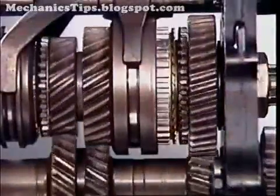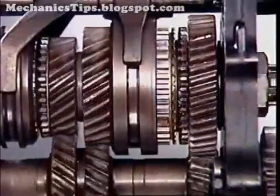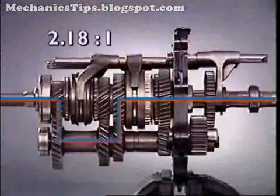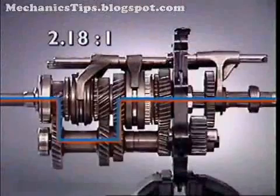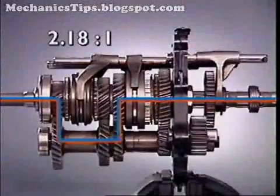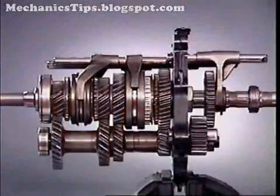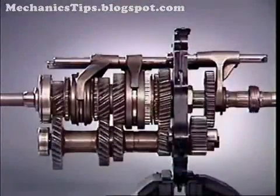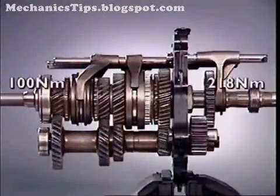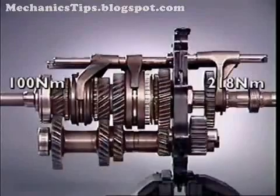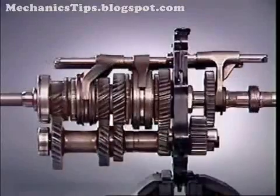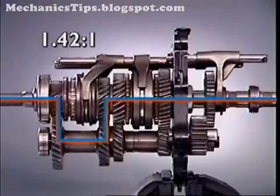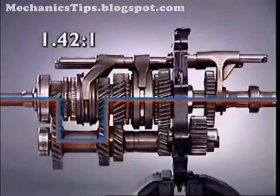In second gear, power flow is through the next adjacent gear. The difference in speed between input and output shafts is reduced — fewer turns of the input are required to give one turn of the output — but there is less torque multiplication. When the engagement sleeve for third gear moves into place, drive is transmitted through the meshing gears at an even higher ratio.